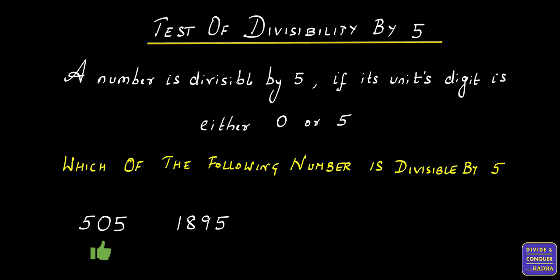The next number is 1895. The number in the unit's digit is 5, which also satisfies the above rule. Therefore, the given number 1895 is divisible by 5. Moving on to the next number, we have 3084. The number in the unit's digit is 4, which doesn't satisfy the above rule. Therefore, 3084 is not divisible by 5.